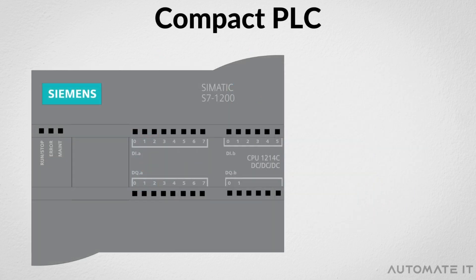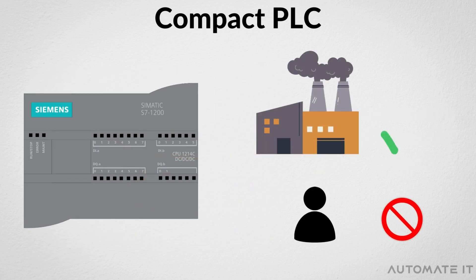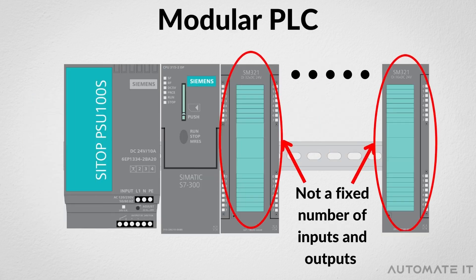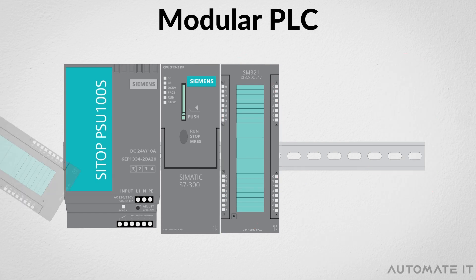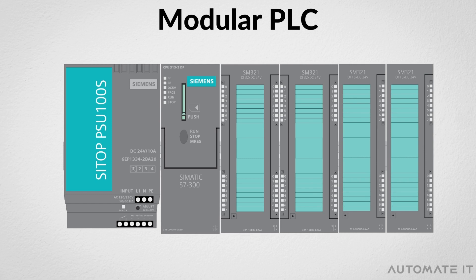In a compact PLC, there is a fixed number of inputs and outputs — it is the manufacturer who decides this number, not the user. However, the modular PLC's number of inputs and outputs is not fixed; the user can add input and output modules to the PLC.